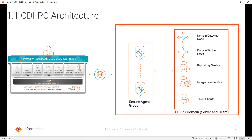During the CDI PC installation, we are going to install a secure agent and connect to IDMC or cloud via the secure agent. It is pretty much similar to what we already have in the cloud ecosystem, where any client will connect to the cloud through a secure agent. Once the CDI PC installation is done, the communication will go via secure agent only. The CDI PC domain and the secure agent installation — the entire setup will be on the customer network.